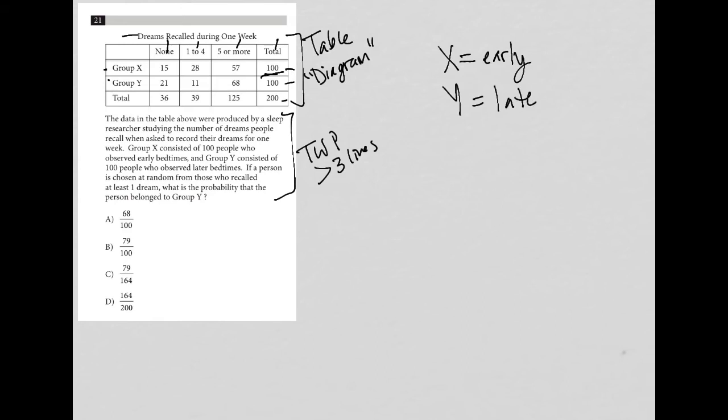The next sentence says if a person is chosen at random from those who recalled at least one dream, so first of all we're only paying attention to those who recalled at least one dream. So the none column is gone. We only care about one or more.